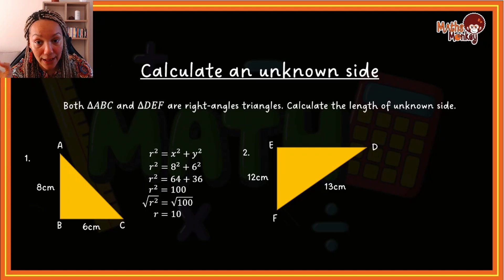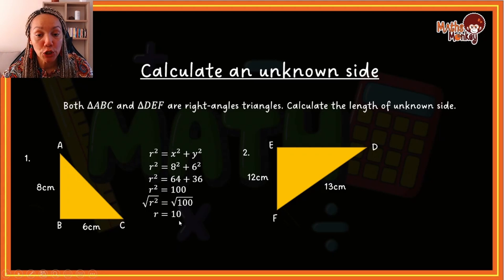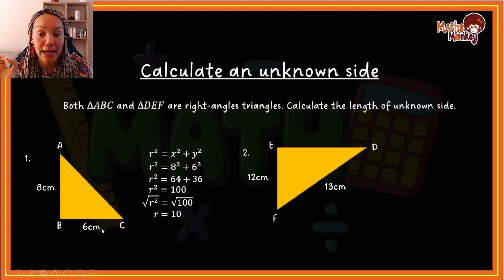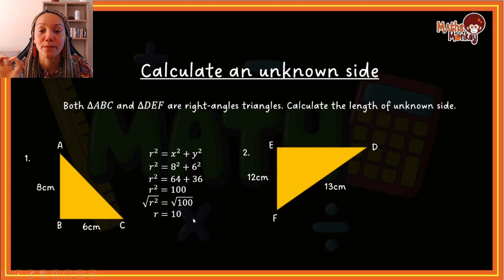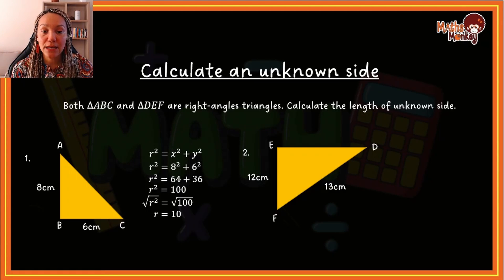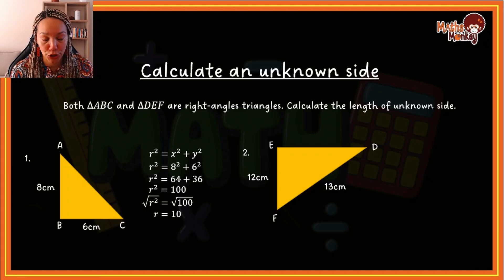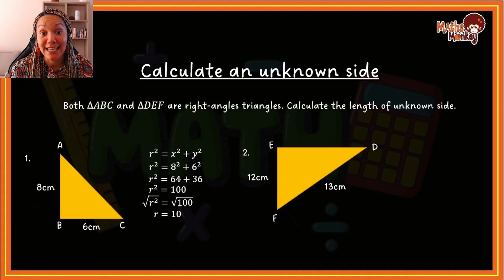So r is equal to 10 centimeters — you have now calculated the length of the unknown side. Because the entire question is in centimeters, your final answer is also 10 centimeters. That's how you use the Pythagoras formula to find the hypotenuse.